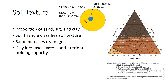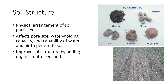Soil texture affects drainage, with sandier soils having more drainage and soils with more clay having less drainage but more water and nutrient holding capacity. Soil structure is the physical arrangement of soil particles and profoundly affects pore size, water holding capacity, and the capacity of water and air to penetrate the soil. Poor soil structure hinders plant growth. Factors that affect soil structure include tillage, traffic, and rainfall. For example, bringing heavy machinery into the field when the soil is too wet leads to soil compaction, which adversely affects pore size, water infiltration, and soil aeration. Organic matter or sand can be incorporated to improve soil structure.